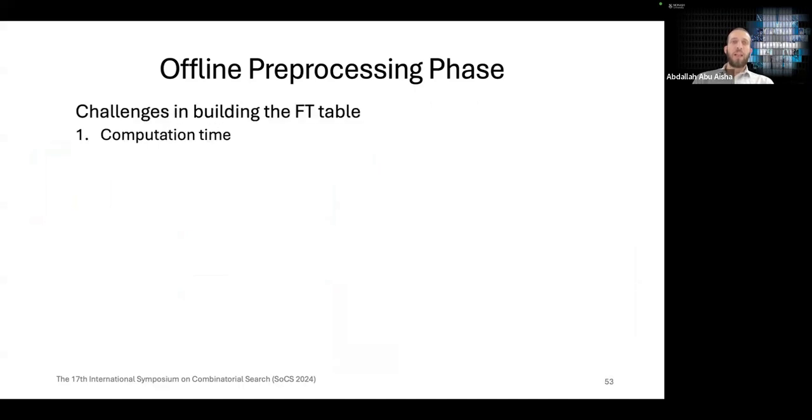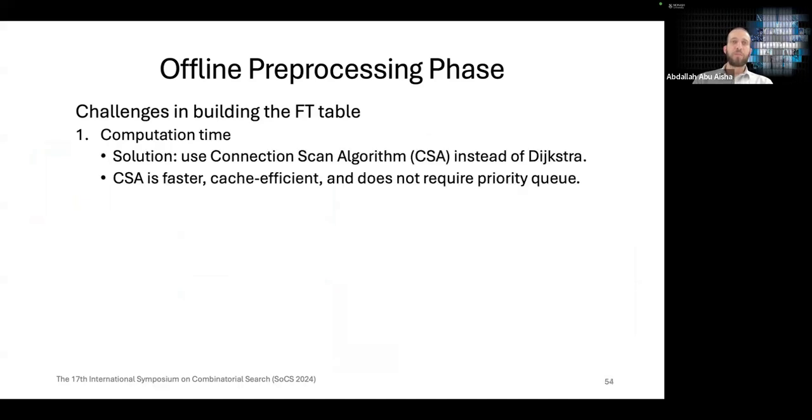However, this can lead to some challenges. The first one is the computation time. The time of building the FT table might be too long. We solve this by using a connection scan algorithm, CSA instead of Dijkstra. This is because CSA is faster, cache efficient, and does not require priority queue.